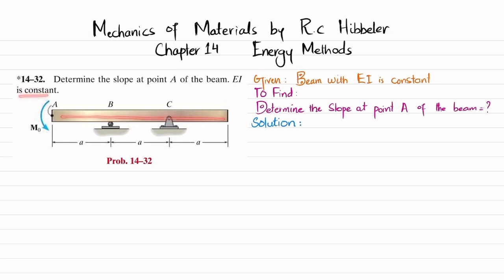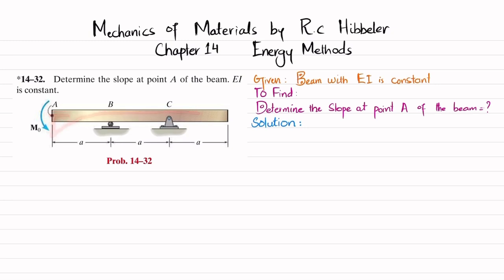The beam has a roller support at point B and a pin support at point C. At point A there is an external moment M0. Due to this moment there will be bending, and you have to find the slope at point A. Due to this moment the beam will bend, and this will be the slope at point A.